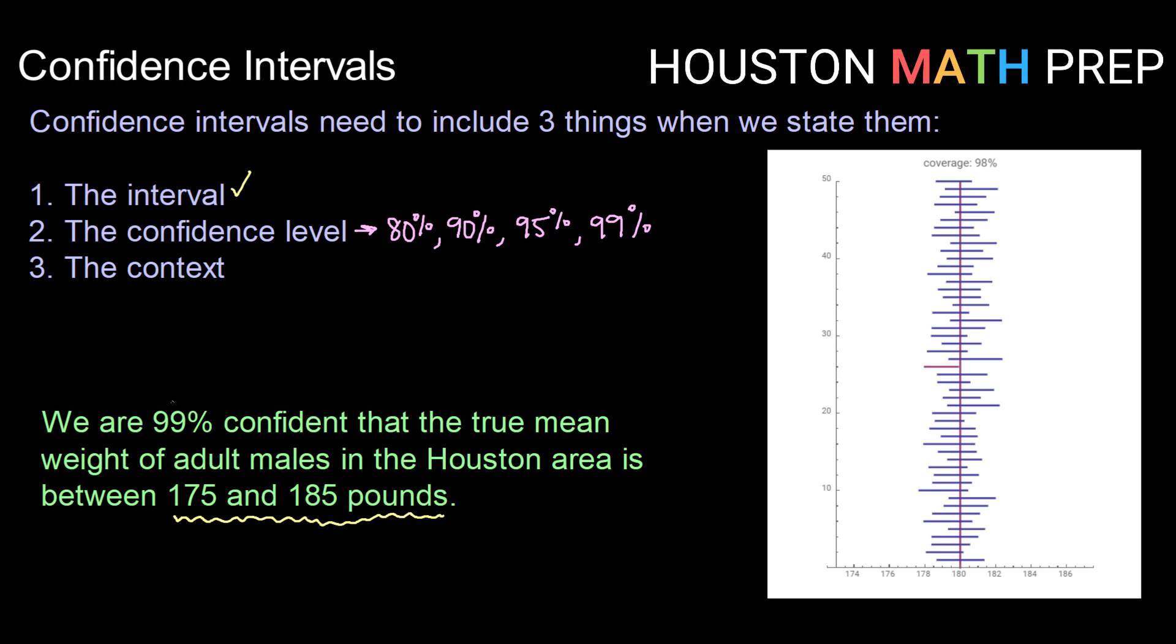So it doesn't talk about a probability of the true population mean being contained in the interval. It means if, for example, a 99% confidence interval means if we performed this confidence interval calculation on 100 samples, then we believe 99 of our confidence intervals, because we're 99% confident, 99 of our confidence intervals would contain the true mean. So there's our level of confidence.